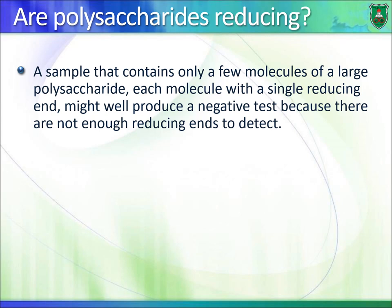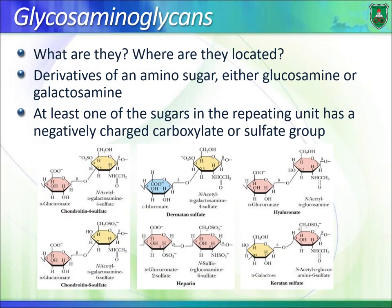Polysaccharides are not considered reducing sugars, even though there are some free anomeric carbons, because they are not sufficient in number to make the molecule a reducing sugar. Monosaccharides in polysaccharides can be modified into sugar acids, sugar alcohols, amino sugars, or have sulfate groups added to them.